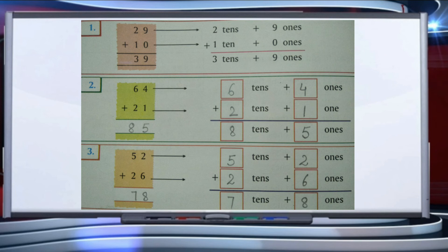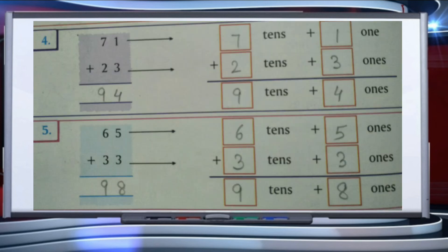So the answer for 52 plus 26 is seventy-eight. Fourth question: 71 plus 23. We write 71 as seven tens and one one, and 23 as two tens and three ones. Add the ones: one plus three equals four. Add the tens: seven plus two equals nine. So nine tens and four ones — the answer is ninety-four.